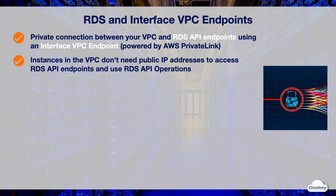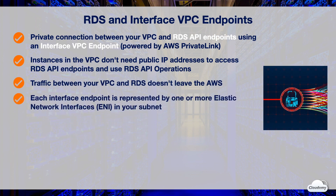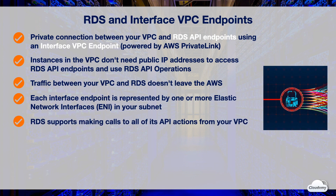With interface VPC endpoint, instances in your VPC don't need public IP addresses to communicate with RDS API endpoints to launch, modify, or terminate DB instances. Your instances don't need public IP addresses to use any of the available RDS API operations. Traffic between your VPC and RDS doesn't leave AWS. Each interface endpoint is represented by one or more elastic network interfaces or ENIs in your subnet. RDS supports making calls to all of its API actions from your VPC.